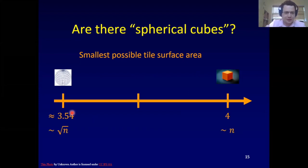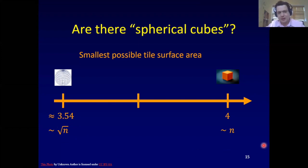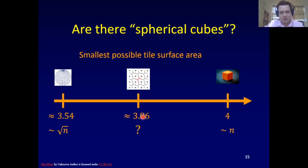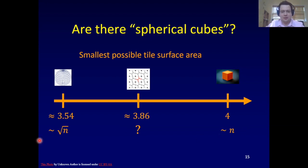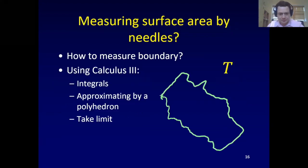So here's what we know: the absolute minimum is the unit ball with surface area root n, and the easy thing we can get is about n. The question is whether the truth is more like n or more like root n. Are there spherical cubes — shapes that behave like cubes and can be packed into space like boxes, but have surface area more like that of a ball?